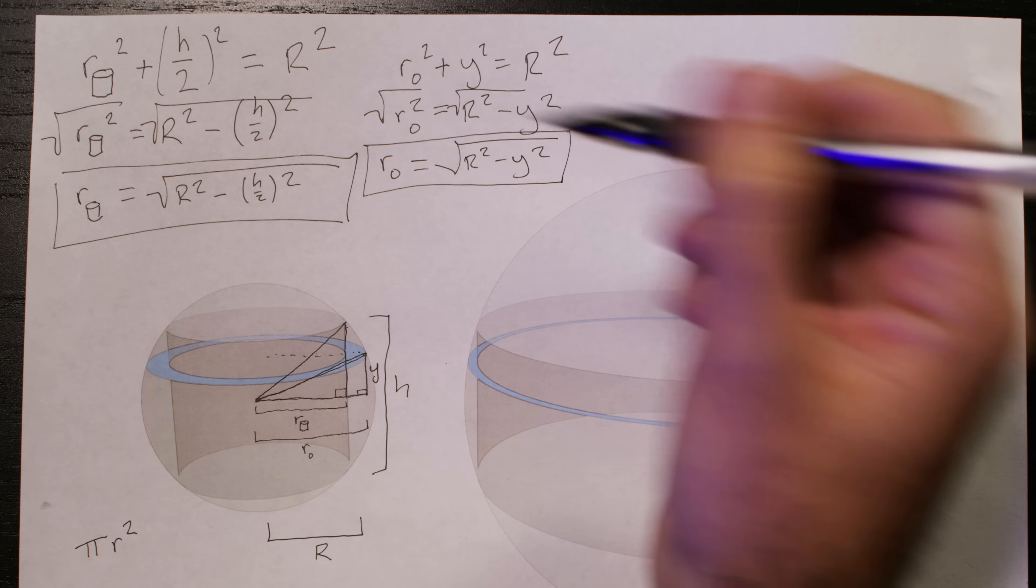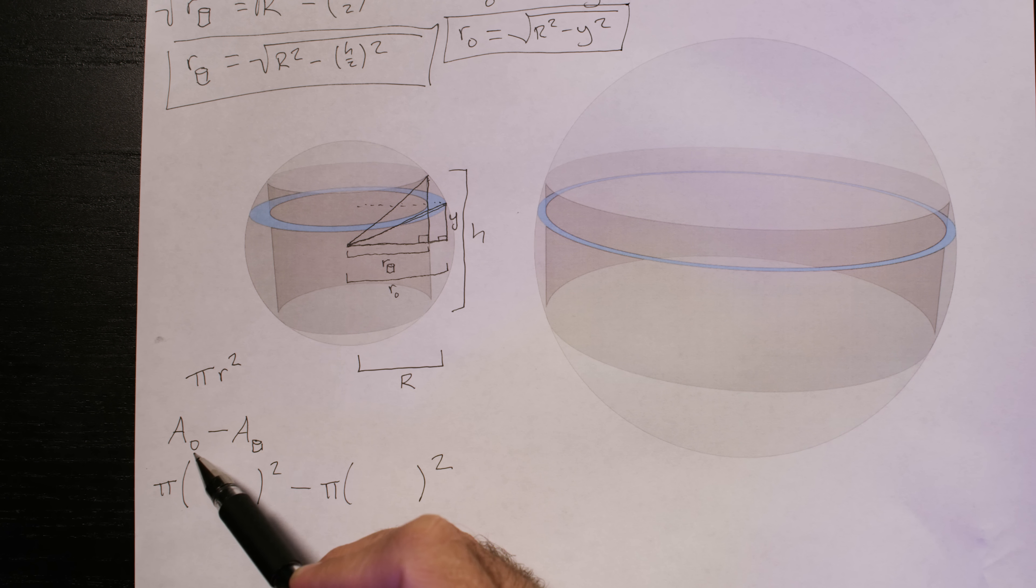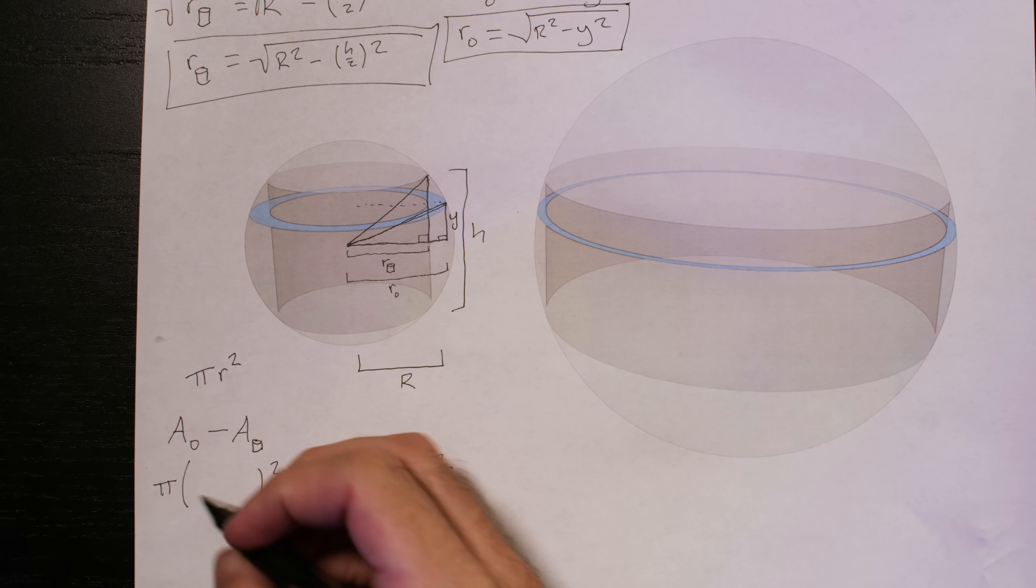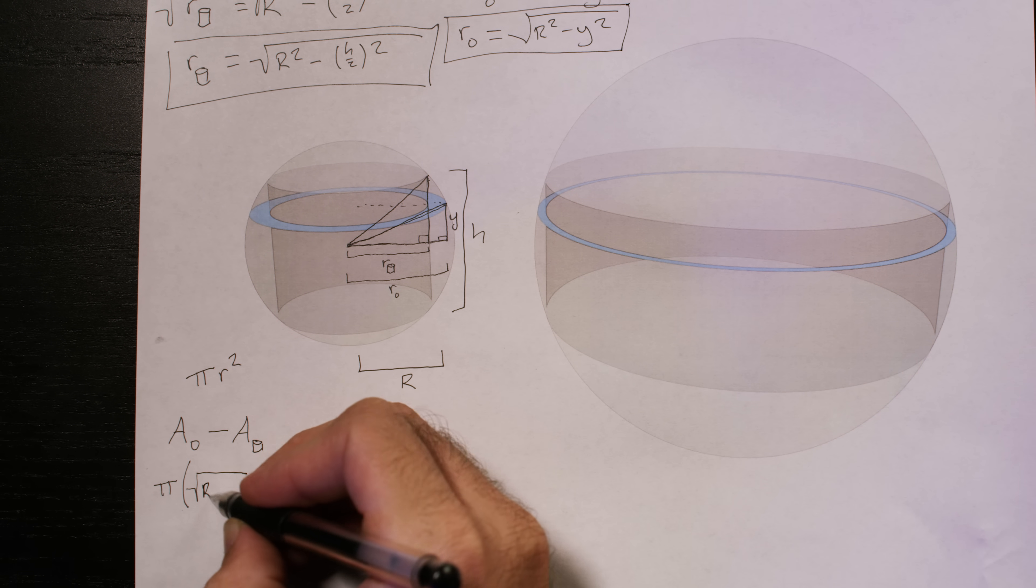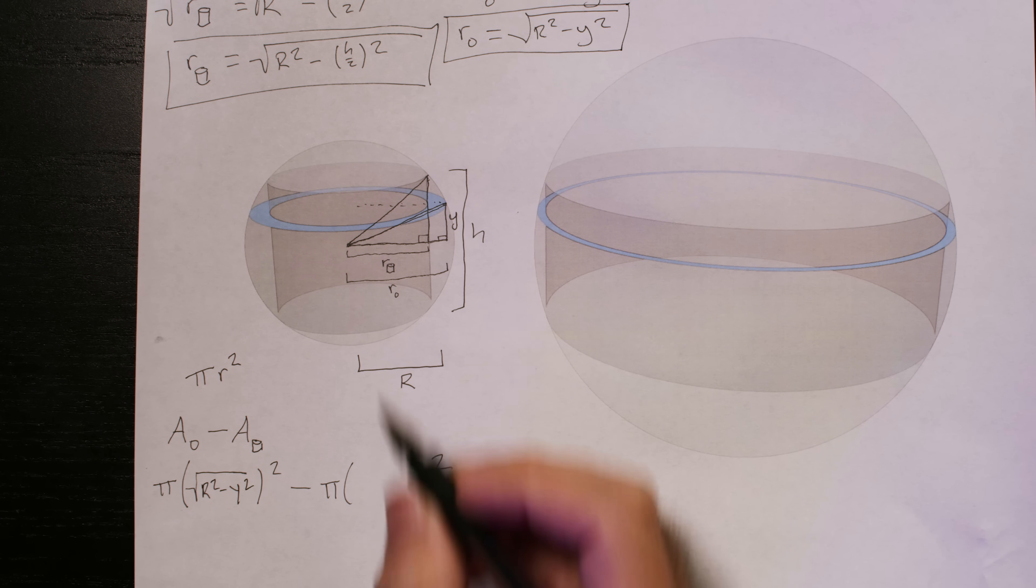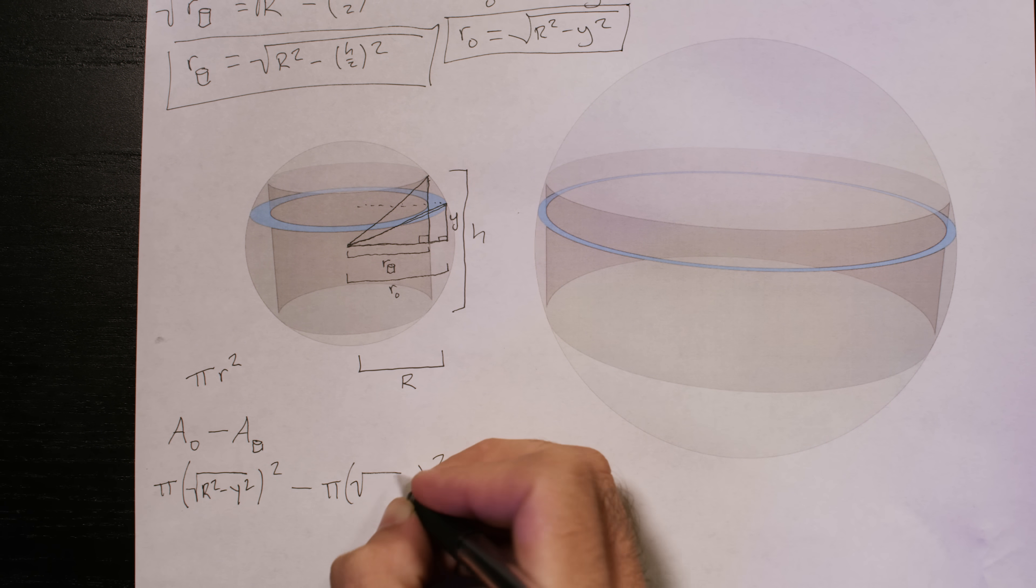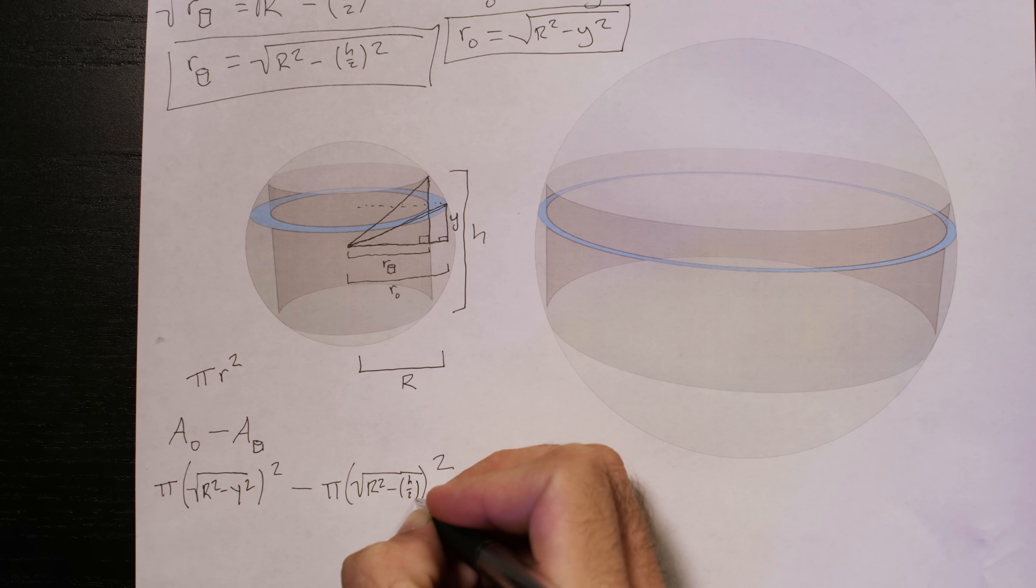Okay, anyway, let's take these two radii and plug them into our formula. Okay, the area of the cross section of the sphere is what we want first. Okay, that's just the square root of R squared minus Y squared. Not too bad. Now, the radius of the cylinder is the square root of R squared minus half the height of the cylinder squared.